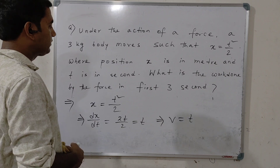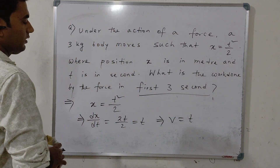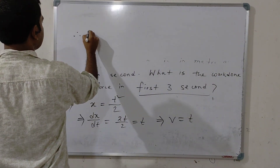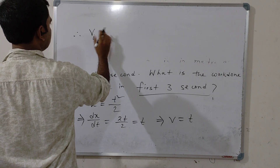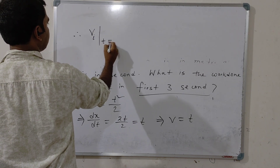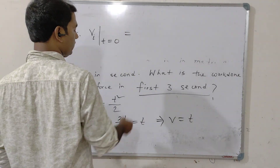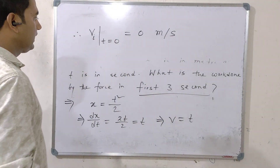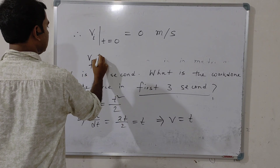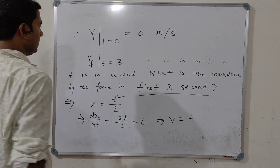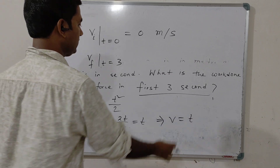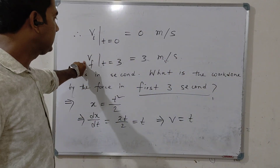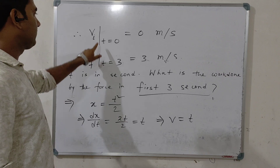Now, we have to find out the work done in the first 3 seconds. Find out the initial velocity: initial velocity means velocity at t equal to 0, so put 0 in place of t — it becomes 0 meters per second. Now find the velocity at t equal to 3 seconds: put 3 in place of t, it becomes 3 meters per second. So, final velocity is 3 m/s and initial velocity is 0 m/s.